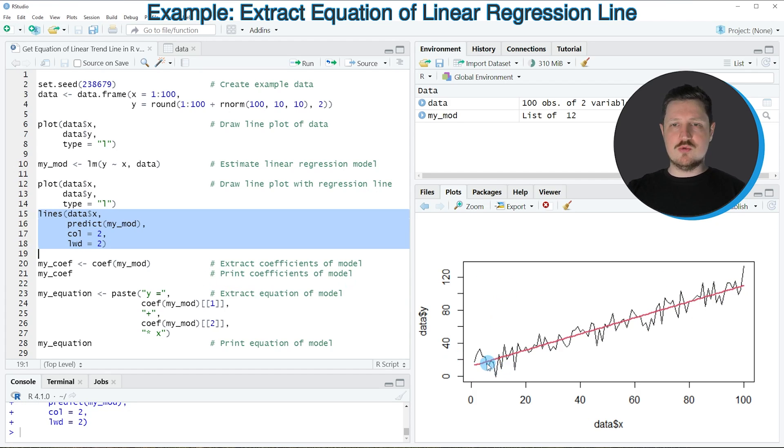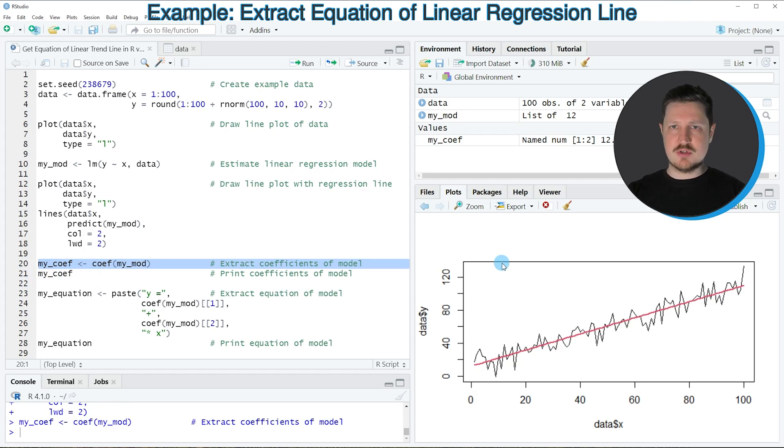Now let's assume that we want to get the equation that corresponds to this trend line. Then we can apply the code in lines 20 to 28. In line 20 I'm first applying the coef function to our model object myMod, and then I'm returning the output in a new data object called myCoef. If you run line 20, you can see at the top right of RStudio that a new data object is appearing called myCoef.